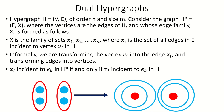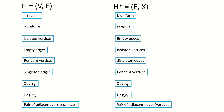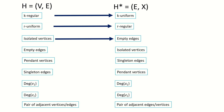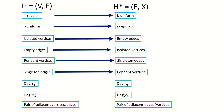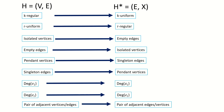The hypergraph H* is called the dual hypergraph of H. From the definition, we can see that the dual of K-regular hypergraphs are K-uniform, and the dual of R-uniform hypergraphs are R-regular. Isolated vertices become empty edges, empty edges become isolated vertices, pendant vertices become singleton edges, and singleton edges become pendant vertices. The degree of a vertex in the original hypergraph is the degree of the corresponding edge in the dual, and the degree of an edge in the original is the degree of its corresponding vertex in the dual. Interestingly, adjacency is maintained: a pair of adjacent vertices becomes a pair of adjacent edges, and a pair of adjacent edges becomes a pair of adjacent vertices.